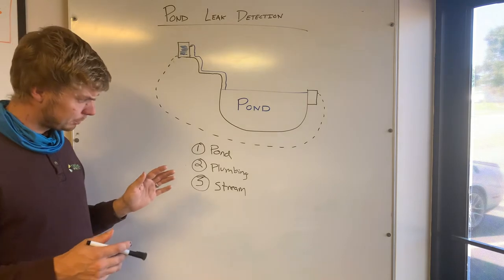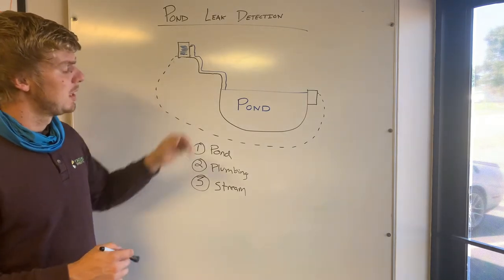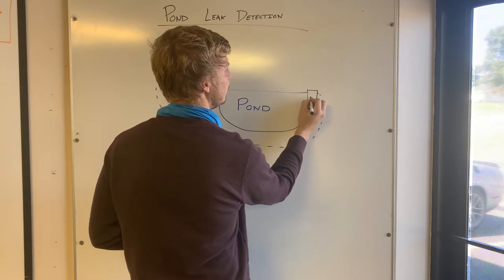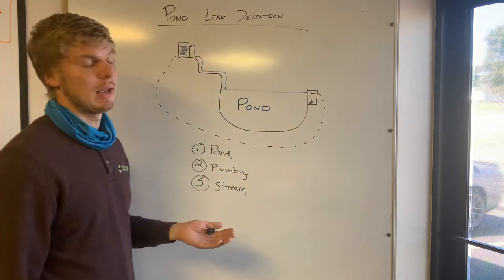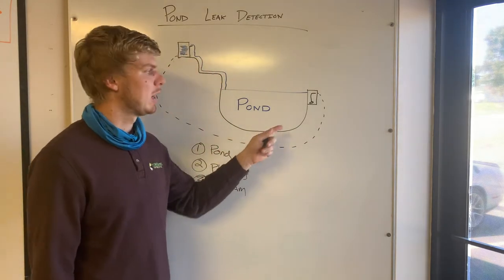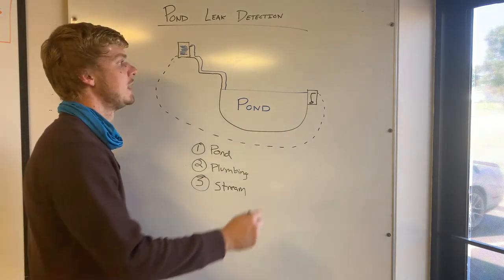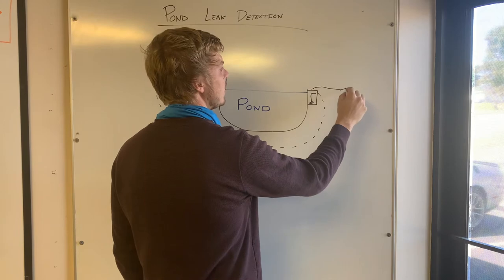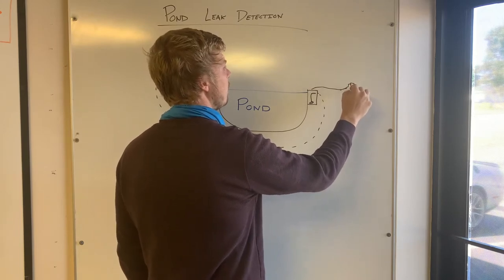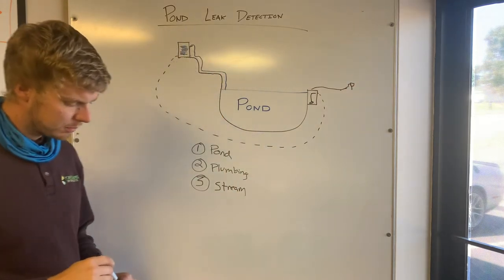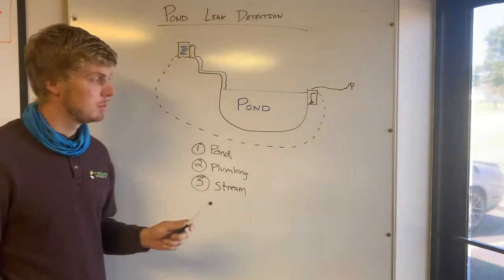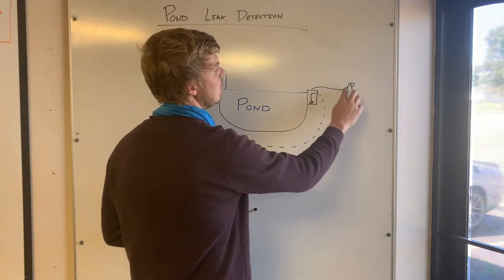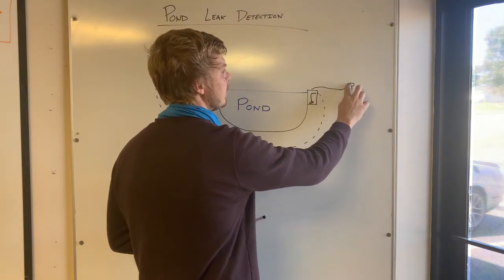But anyways, the idea of the test is you got your pump in here most of the time. Sometimes you have the pump in the bottom of the pond. Most of the time it's in a skimmer and normally the cord comes out somewhere over here and then goes and plugs into a box. What we're going to ask you to do before the cleanout is we're going to ask you to unplug the pump.